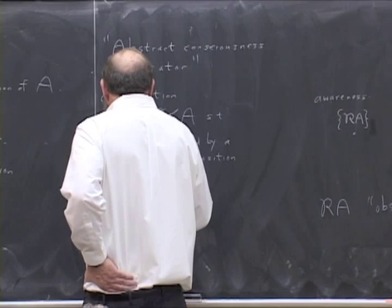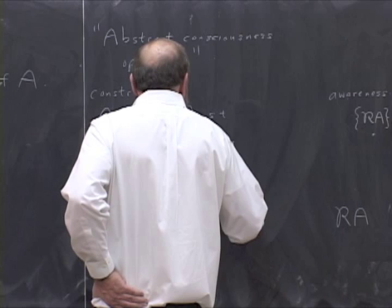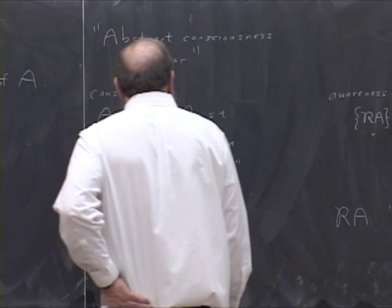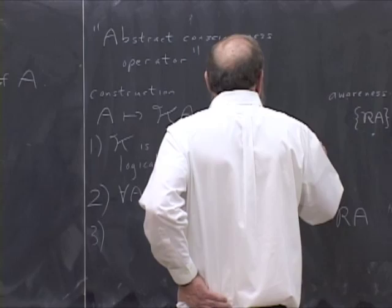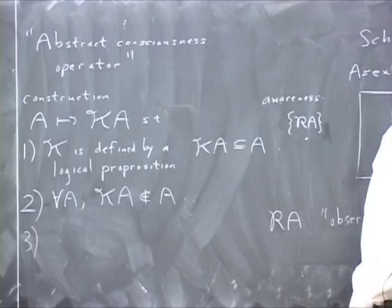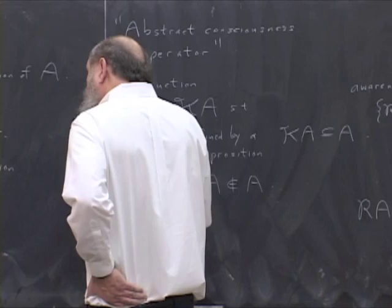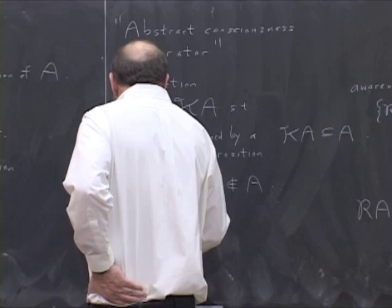And then you want to have that for every set A, KA is not an element of A. Notice here that KA now is automatically a subset of A because it's the elements of A that satisfy the proposition. So I want this second property of R to hold in generality. And then I want this third property to hold.